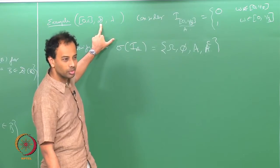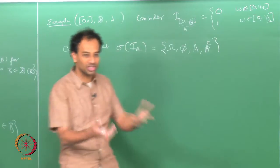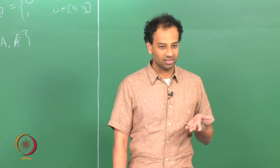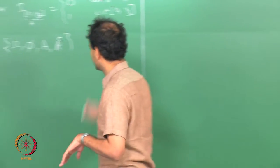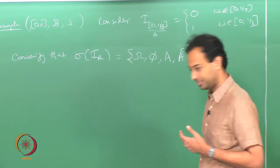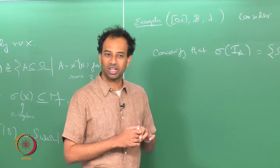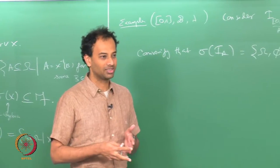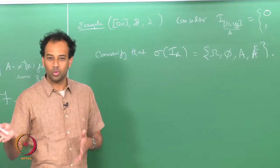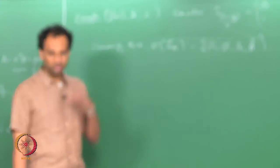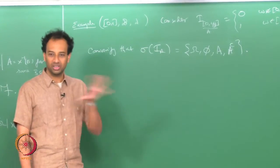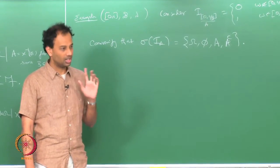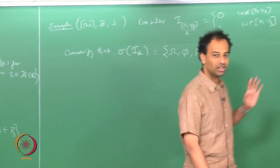On the other hand, if you consider the random variable X(ω) = ω — the identity map — then σ(X) will be the full Borel sigma algebra again. For the constant random variable that takes value C with probability 1, all omegas map to that constant C, so the generated sigma algebra will be the trivial sigma algebra {Ω, ∅}. You cannot look at a constant random variable and decide anything about the occurrence of any subset.